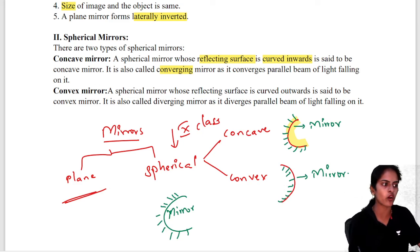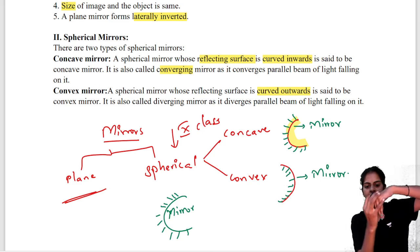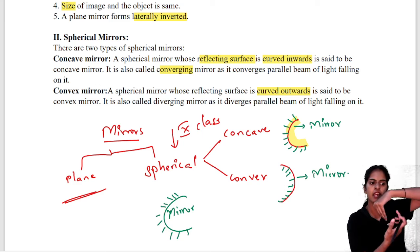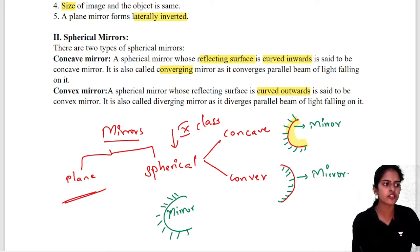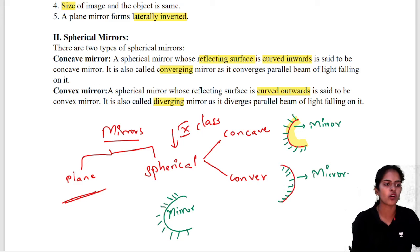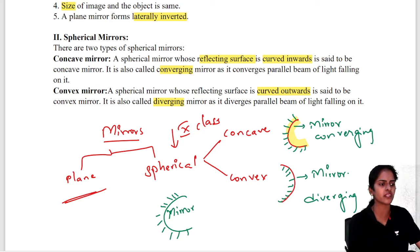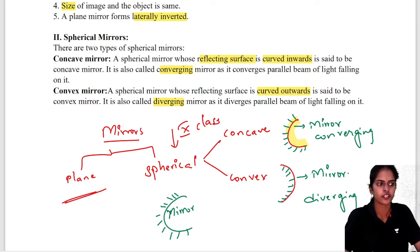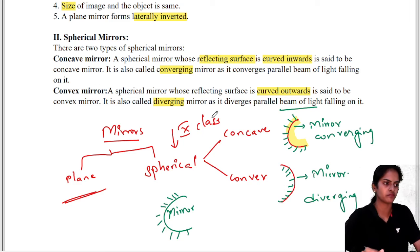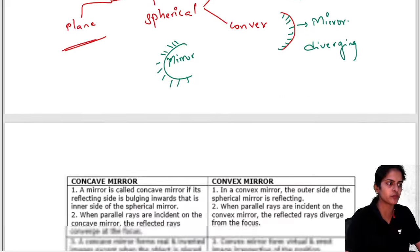A convex mirror is one whose reflecting surface is curved outwards — it bulges out. It is also called a diverging mirror because it diverges parallel beams of light. Concave is called converging mirror; convex is called diverging mirror.